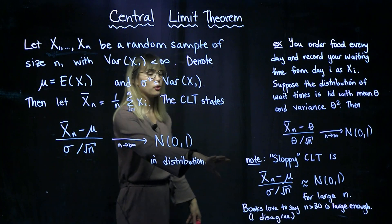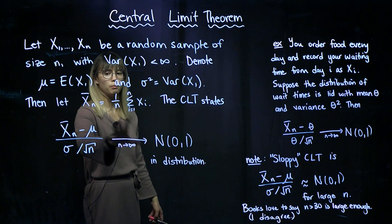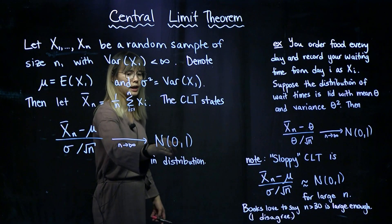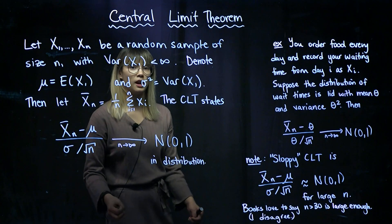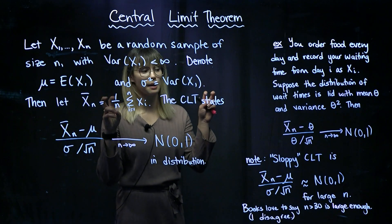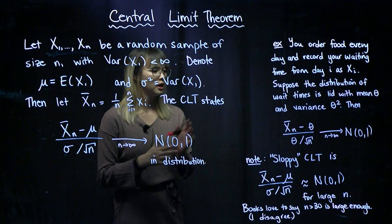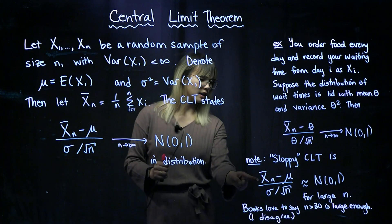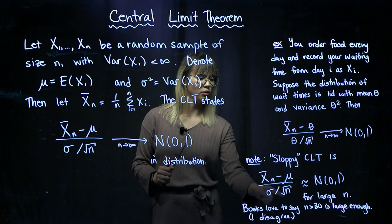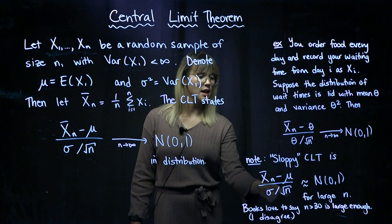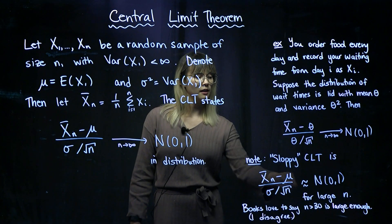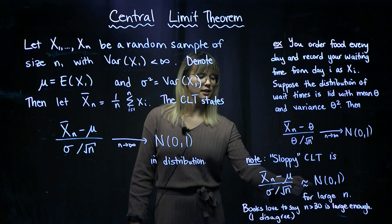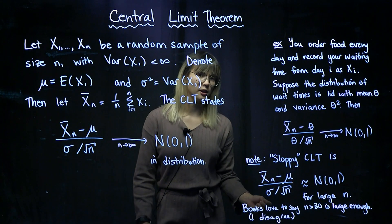Alright, so lots of times people will take this and rewrite it in what my dissertation advisor called the sloppy version of the central limit theorem. So people like to write x bar n minus mu over sigma over root n is approximately following a standard normal distribution for a large n.